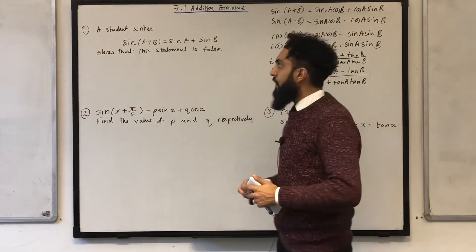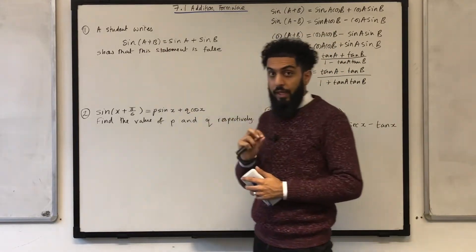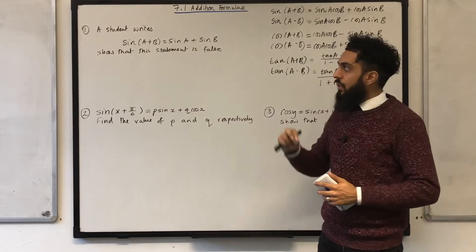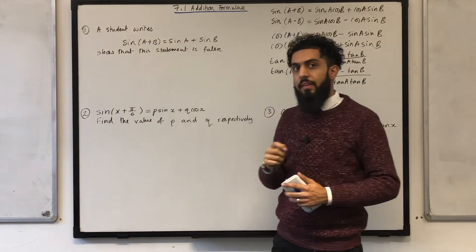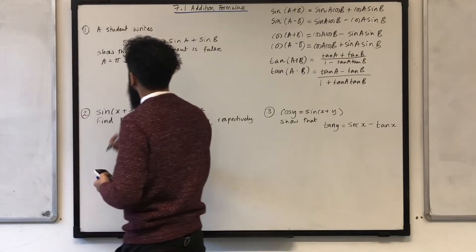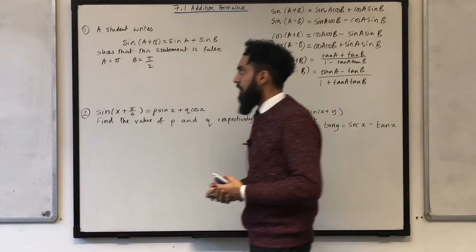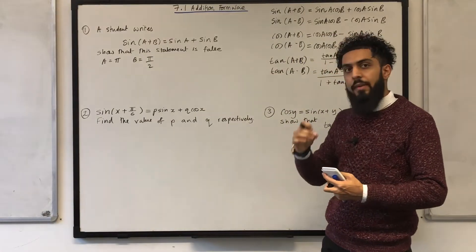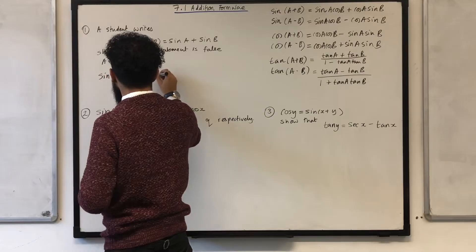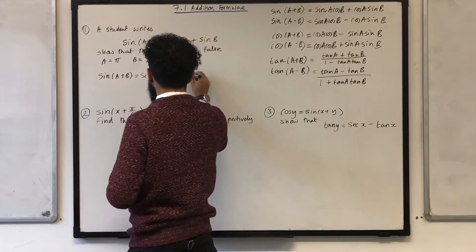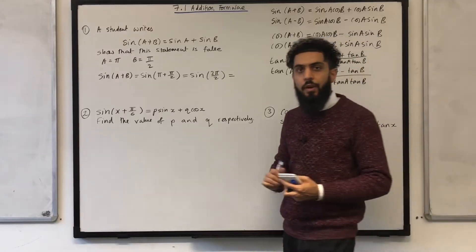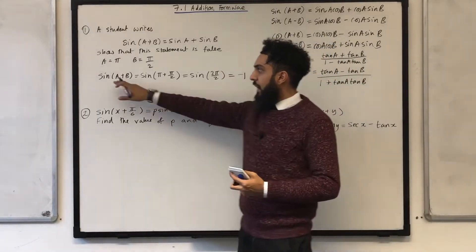Let's start off with question number 1. It says a student writes: sin(A plus B) is equal to sin A plus sin B. Show that this statement is false. To show that this statement is false, I need to pick values for A and B that would disprove it. For example, if I pick A equal to π and B equal to π over 2, I'll first work out sin(A plus B). Sin(π plus π over 2) is sin(3π over 2), which equals minus 1.